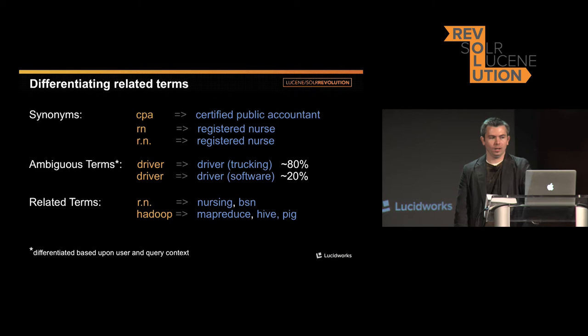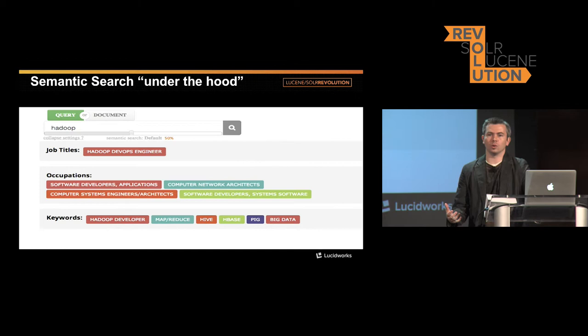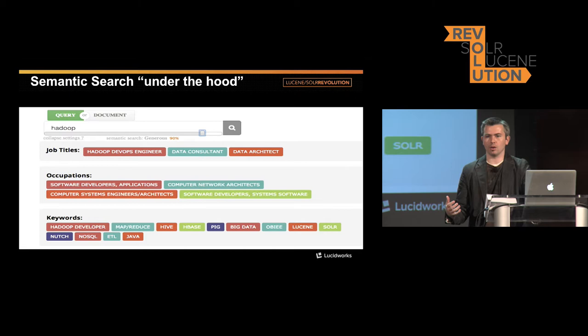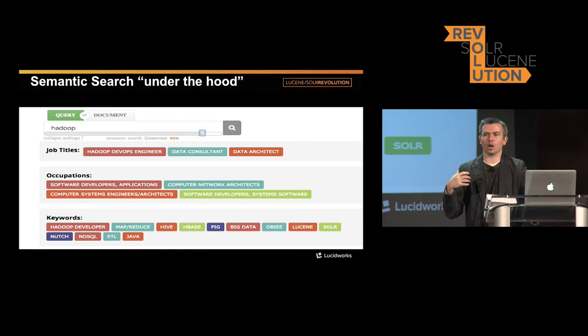There are interesting things related to finding synonyms, ambiguous terms, and related terms. Our overall goal is to tie this information back into a user interface where users can interact with it. If you type the keyword 'Hadoop,' we can surface the job titles, occupations, and related keywords associated with it, and present that back to users so they can add or delete things they want. We're really trying to create an augmented search experience — not just doing everything behind the scenes, but allowing users to drive it.